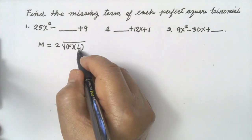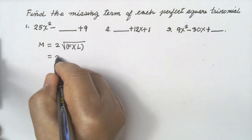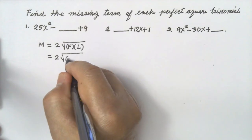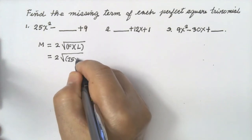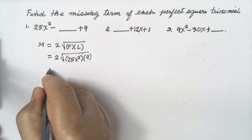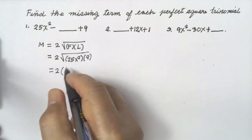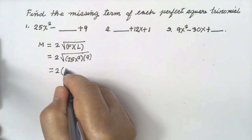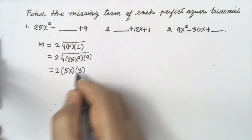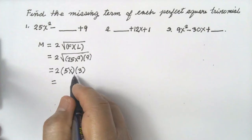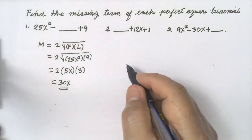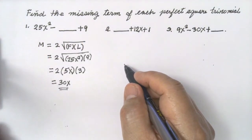Substituting: the first term is 25x² and the last term is 9. So 2 times the square root of 25x² is 5x, and the square root of 9 is 3. Then multiply: 2 times 5x times 3 equals 30x. So 30x is the missing middle term.